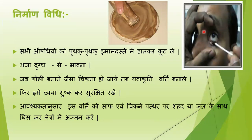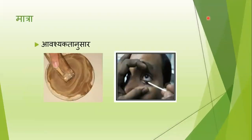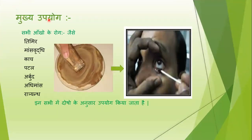Iska prayog hum log neetra rog mein karte hain. Aapko iska prayog dosho ko dhyan mein rakhte hue karna hai. Neetra rog mein jo matra iski hoti hai, woh avashyakta anusar hoti hai — means jitna aapko zaroorat hai, utna aap ise ghiskar lagayen. Iska jo mukhya upyog hai — aap kaun kaun se aankhon ke rog mein istamal kar sakte ho — to hain: Timir, Maunsavruddhi, Kaach, Patal, Arbudh, Adhimans, aur Ratriyandh. In sabhi rogon mein aap dosho ke anusar iska upyog kar sakte hain.